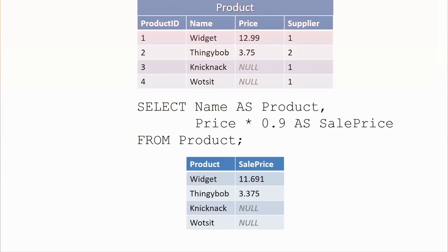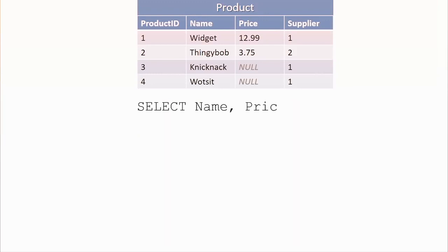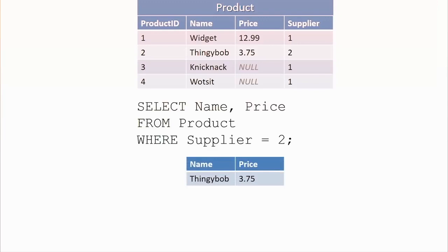We can apply a WHERE clause to filter rows — for example, bring back only products where the supplier is supplier2. One important thing to understand is the order in which the database engine interprets a SELECT statement: it looks at the FROM clause first, then applies the WHERE filter, then selects the columns. Learning that order helps you understand what the output will be as statements get more complex.